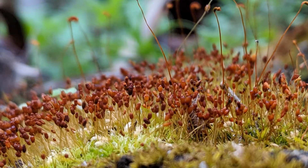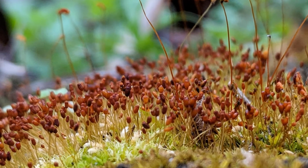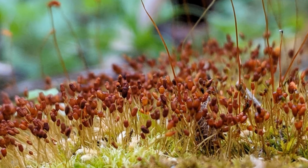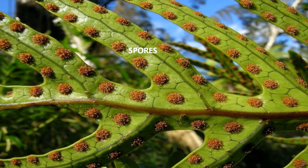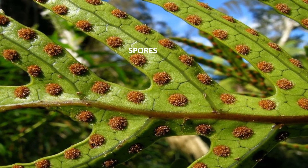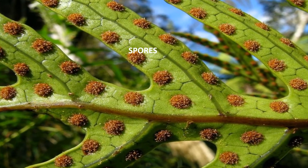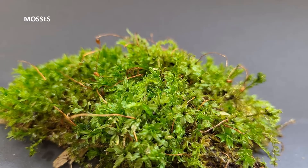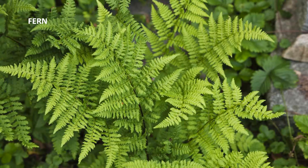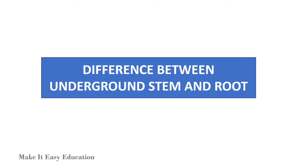Spores. Some plants do not bear flowers and seeds. They bear special structures called spores for reproduction. Mosses and ferns reproduce through spores. Difference between underground stem and root.